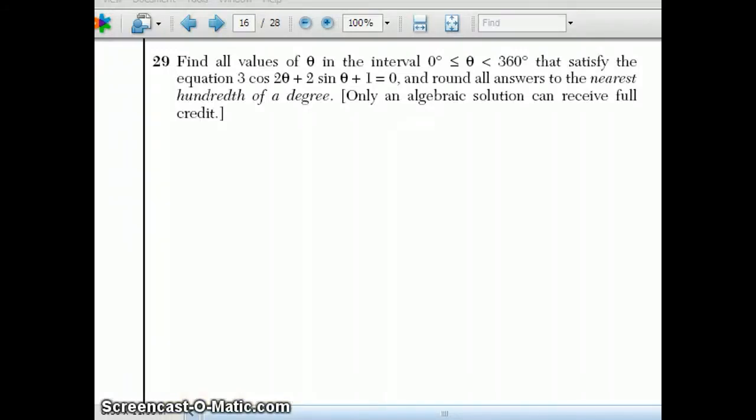They want you to solve for all the values between 0 and 360 for 3 cosine 2 theta plus 2 sine theta plus 1 equals 0. Rounding all answers to a hundredth of a degree and only an algebraic solution is acceptable.